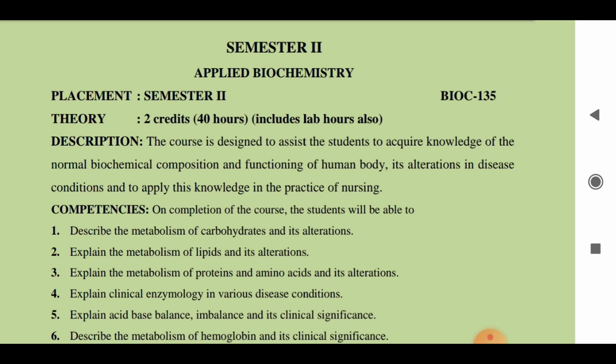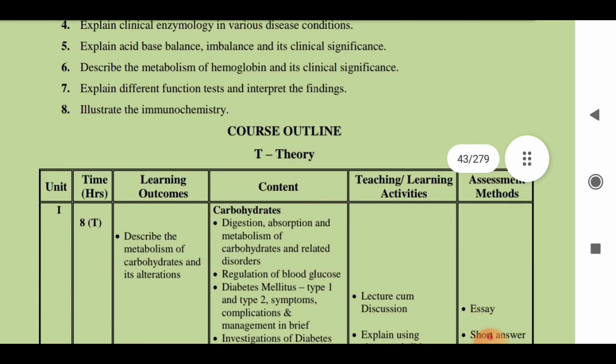The first subject is Applied Biochemistry. You have two credits for theory, and the total theory hours are 40 hours, which also includes lab hours. This course is designed to assist students in acquiring knowledge of the normal biochemical composition and functioning of the human body, its alterations in disease conditions, and how to apply this knowledge in the practice of nursing.